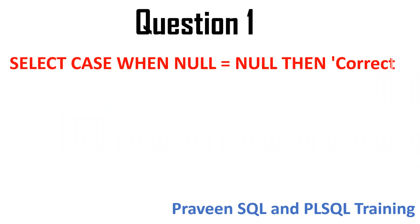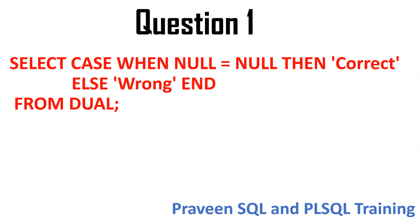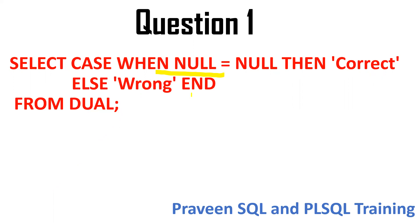In an interview, they will give you a query and expect the exact answer. The first question is about the CASE statement. When this condition matches, we need to display like this; when this condition matches, we need to get the output. Now, null equal to null — is it correct? Remember one thing: one null cannot be equal with another null. So this condition's output will be the else part.